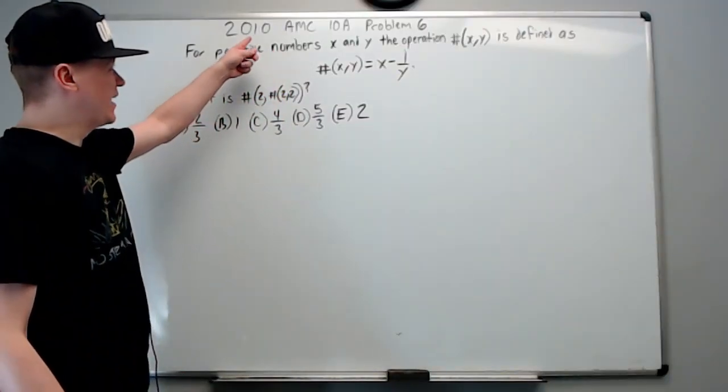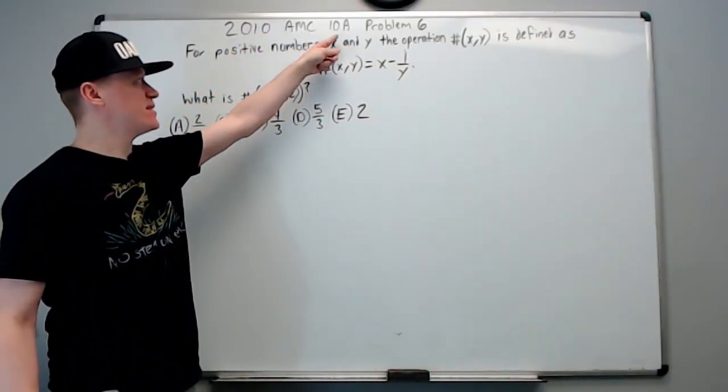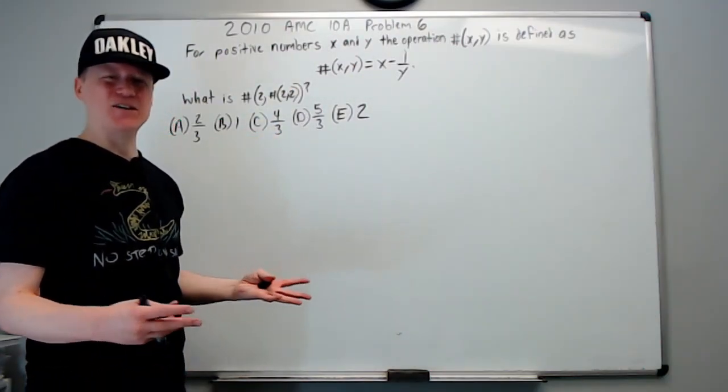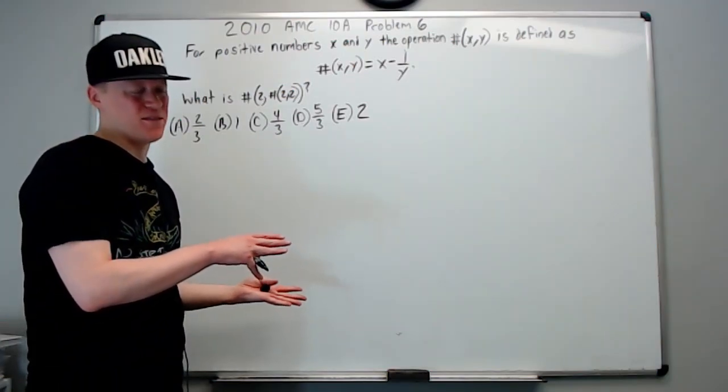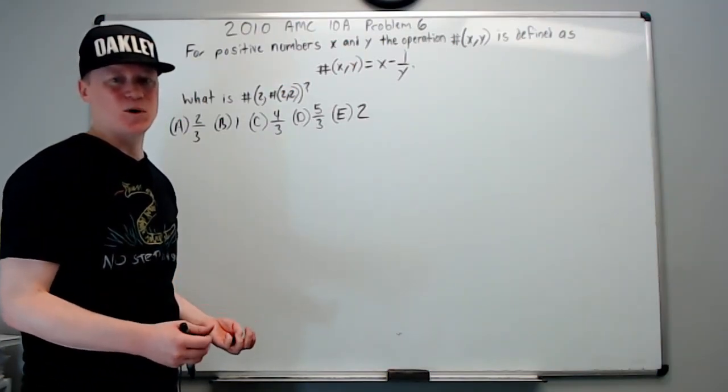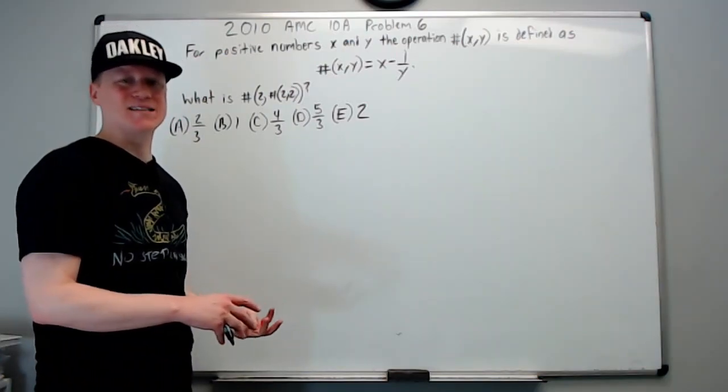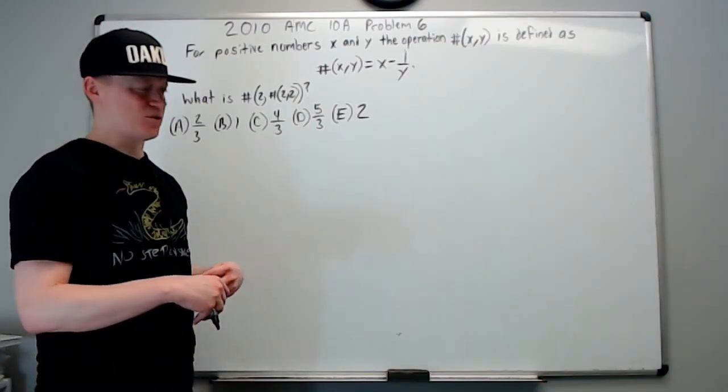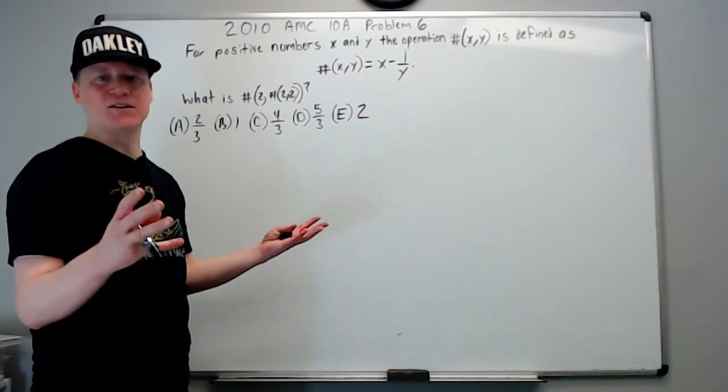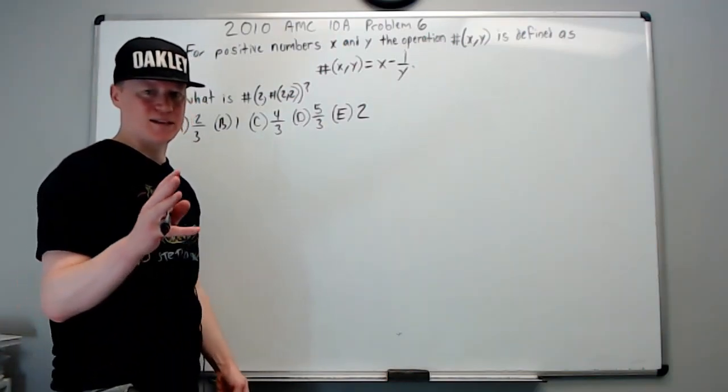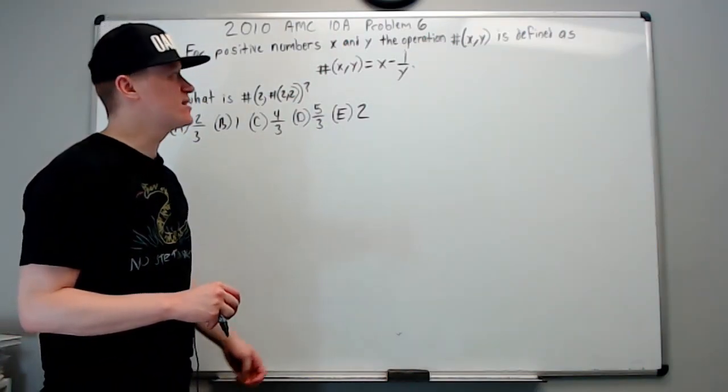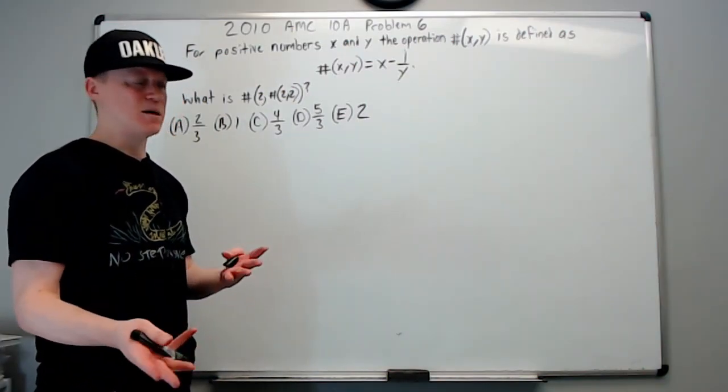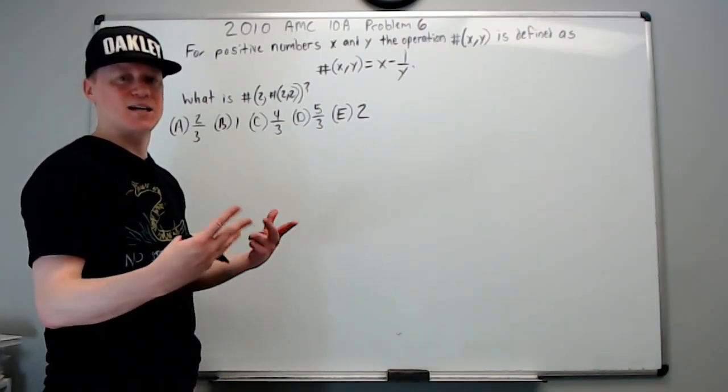All right, this is the start of the next set of five for the 2010 AMC 10A, problem number six. On problems six through ten, you want to average between maybe 30 seconds and a minute and a half per question on the older tests. All of this is subject to modification per year. They could throw a wrench at you and number eight could be a totally weird problem that no one's ever thought of. The older problems become more familiar over time; you may have seen them appear in other local math competitions.